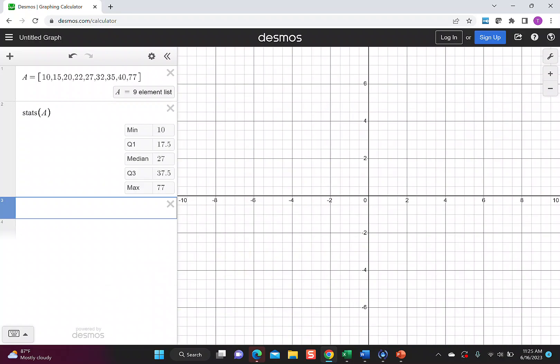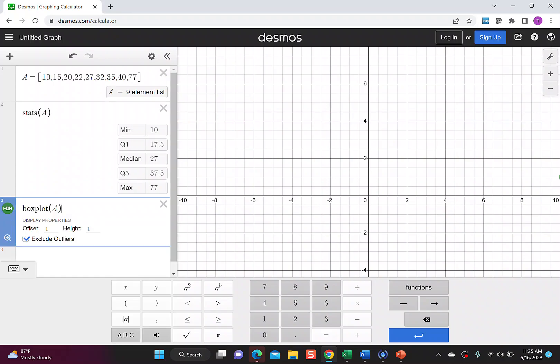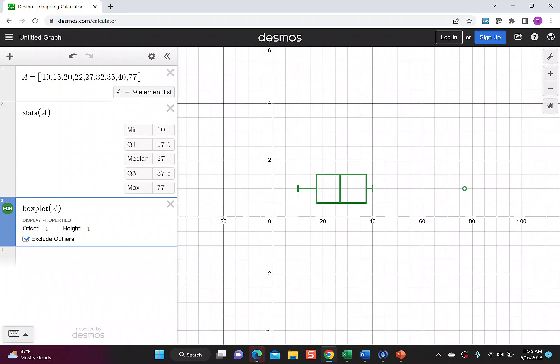Let's add in a box plot so we can graphically see these values. I'm going to type box plot. I type in A to tell Desmos what values to use, and then I hit the zoom so that I can see the values. Now, notice out here, I have this little circle over at 77. That says that this is an outlier. If I tell it to exclude outliers, it will extend the bar to go all the way out to 77.